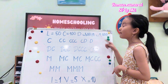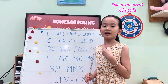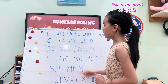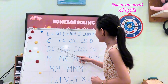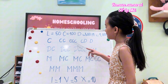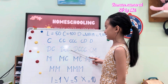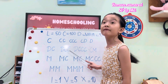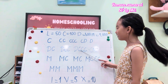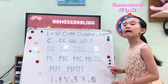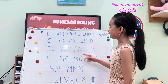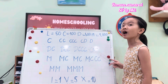D would be 500. What about DC? It will be 600. DCC would be 700. DCCC would be 800. And CM would be 900. So this would be 600, 700, 800, 900.